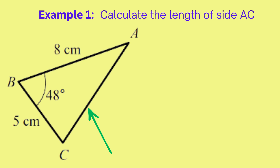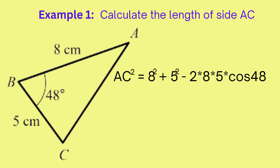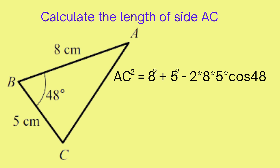In this example we want to find the length of AC, which can also be labeled as side b, since it's the side opposite to angle B. Applying the rule, we square the side we are finding on the left, so we put AC squared. On the right we put the sum of the squares of the other two sides minus two times the product of those sides: eight squared plus five squared minus two times eight times five, times cosine of the angle opposite AC, which is 48 degrees.